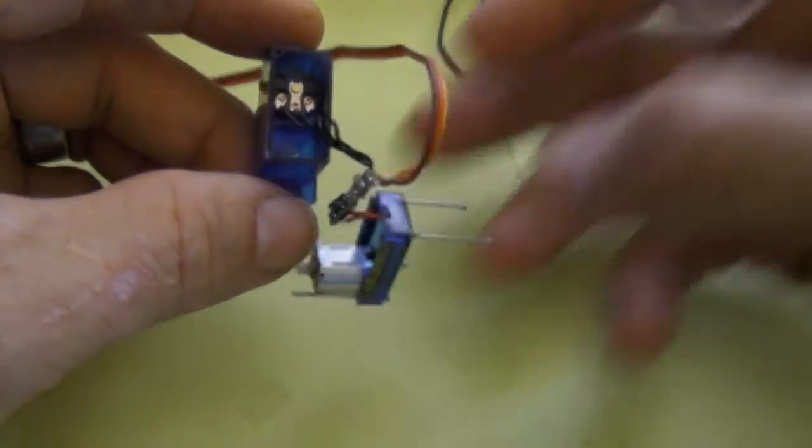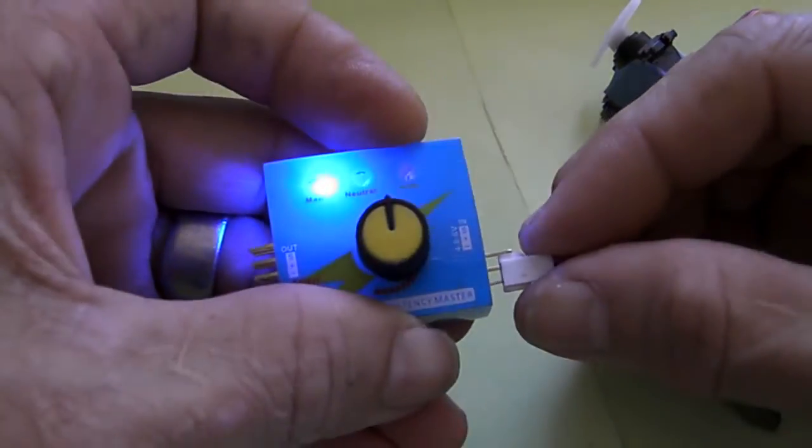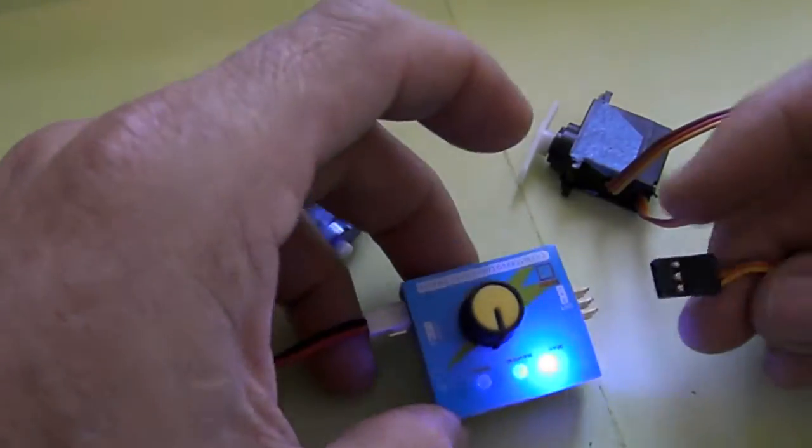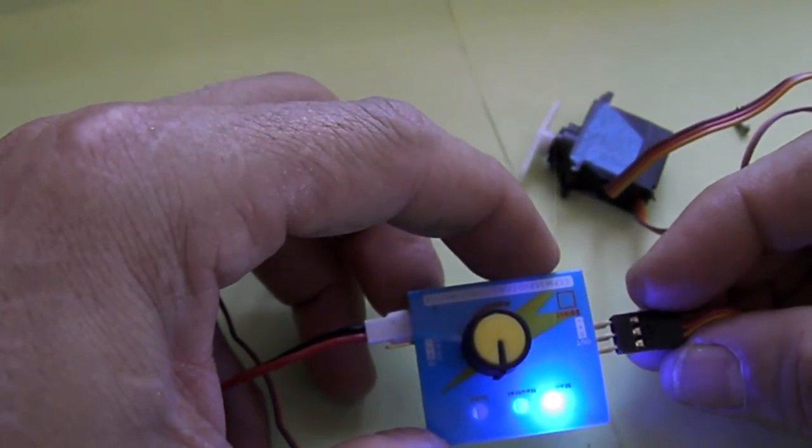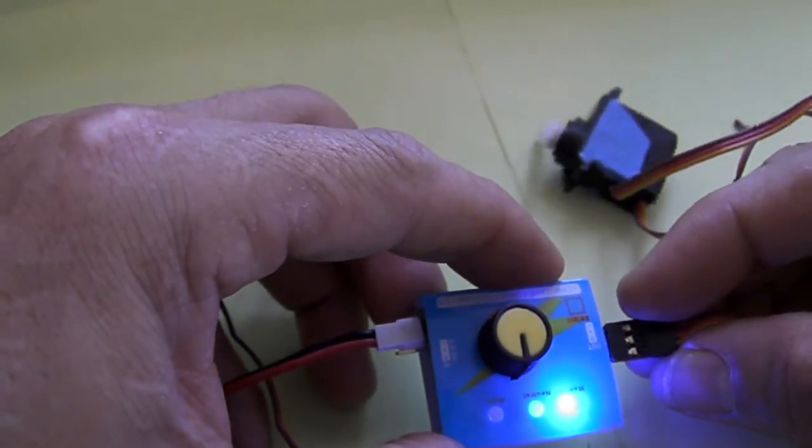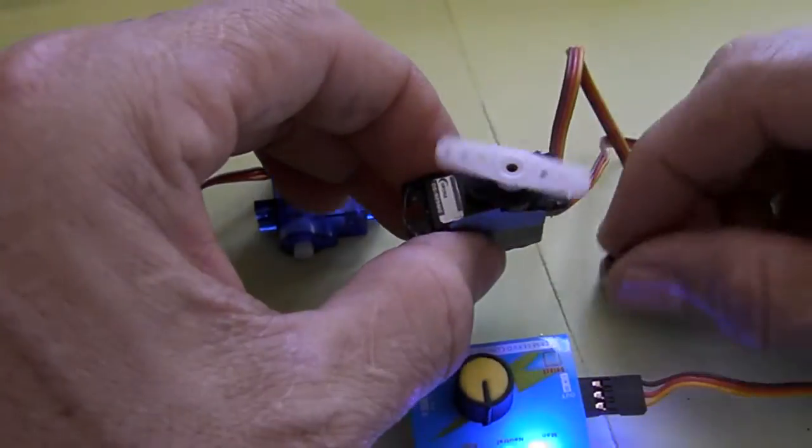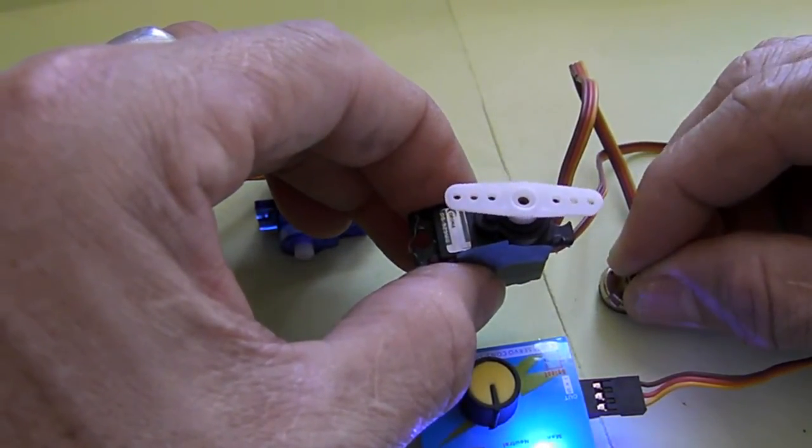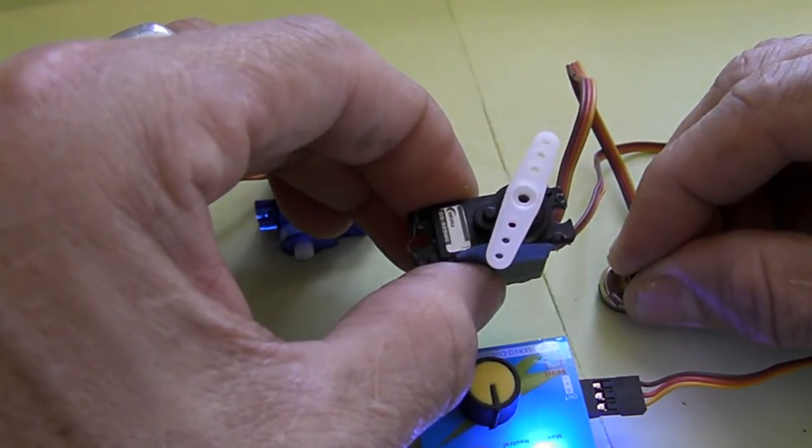Continuing with the example about the continuous rotating servo, we have right here an example of a servo that has been modified. I have this set in the center and the servo is rotating constantly.